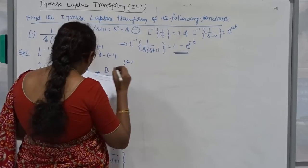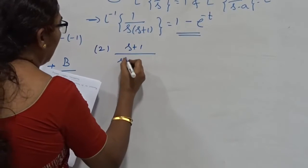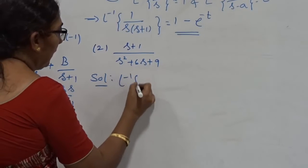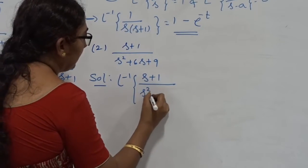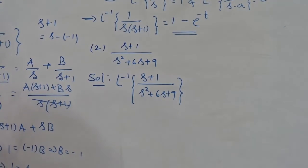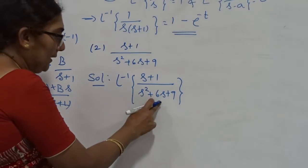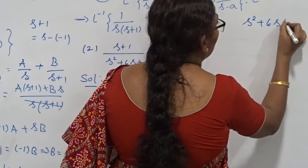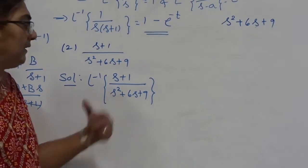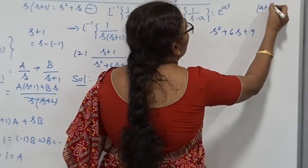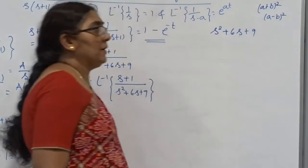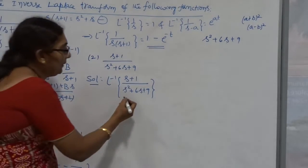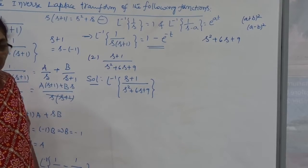The second problem is: find L inverse of S plus 1 divided by S squared plus 6S plus 9. The solution is L inverse of S plus 1 divided by S squared plus 6S plus 9. In the denominator it is a quadratic form — there is an S squared term, a linear term, and a constant term. Therefore, I go for the completing the square method.